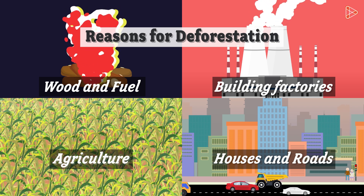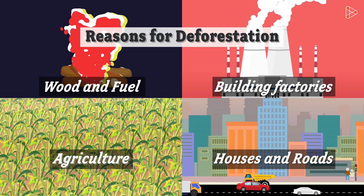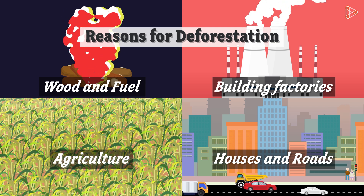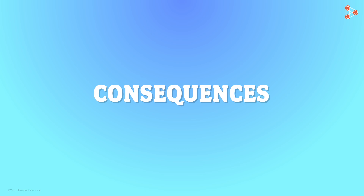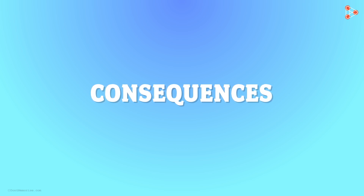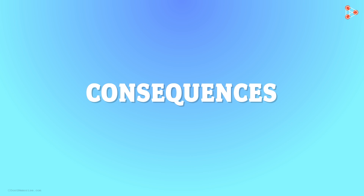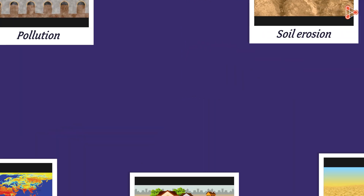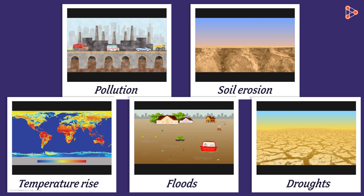Man has cut trees over the years, and this very action has caused some serious reactions — we call them consequences. We cannot get away with reducing the green cover on our planet. Trees and plants are part of an ecological chain and they maintain a specific balance. Let us see how many deforestation consequences you are able to identify from the following pictures, and then look at each in a little more detail.